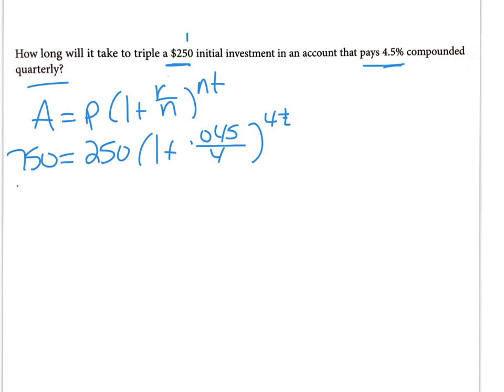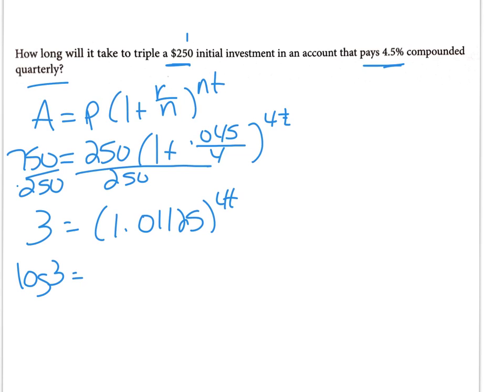What I'm going to do first is divide both sides by 250, that gives me 3 over here. At the same time I'm going to punch in all that stuff in my parentheses: 1 plus 0.045 divided by 4, that gives me 1.01125 to the 4t power. Now I'm kind of stuck because I can't divide, add or subtract anything, so now I'm going to do the log of both sides. Log 3 over here, remember the exponent goes in the front, 4t log 1.01125. To get the t by itself I'm going to divide both sides by this log, so log 3 divided by log 1.01125, I got 98.2027.